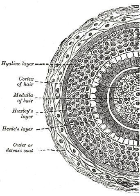Hair grows everywhere on the external body except for mucous membranes and glabrous skin, such as that found on the palms of the hands, soles of the feet, and lips. Hair follows a specific growth cycle with three distinct and concurrent phases — anagen, catagen, and telogen — all three occur simultaneously. While one strand of hair may be in the anagen phase, another may be in the telogen phase.